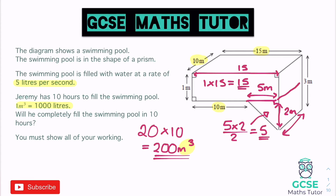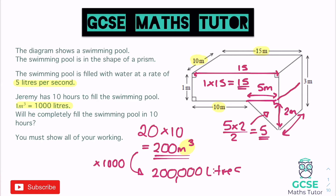We've been given the metric conversion: 1 metre cubed is equal to 1,000 litres. In order to turn our volume into litres so we can figure out how long it's going to take to fill the pool, we can change the 200 metres cubed into litres. Every 1 metre cubed is 1,000 litres, so we multiply by 1,000, giving us 200,000 litres.